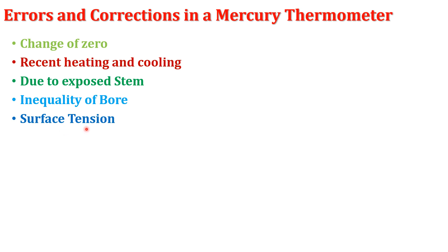The next error is due to surface tension. Since mercury does not wet the wall of the capillary tube, the depression of mercury in the capillary differs at different positions of the stem if the bore is not uniform. To correct this error, thermometer readings should be taken while the mercury column is rising.